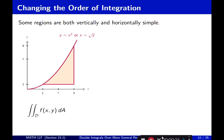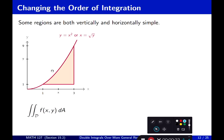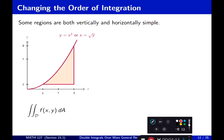Some regions are both vertically and horizontally simple. If you look at this region illustrated to the left, you can see that it's bounded by y equal to x squared, y equal to 1, and x equal to 3. If I draw arrows either in the y direction or in the x direction, I can see that in both cases there are elementary functions on the bottom and top. That shows that the region is both vertically and horizontally simple.